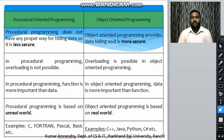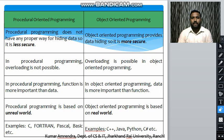In procedural programming, overloading is not possible, whereas in object-oriented programming overloading is possible. We will study two types of overloading: function overloading and operator overloading, which will be covered when we study polymorphism.